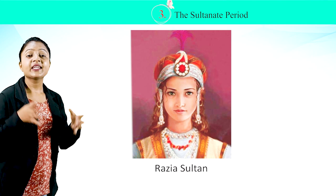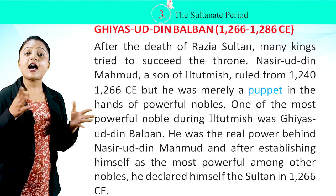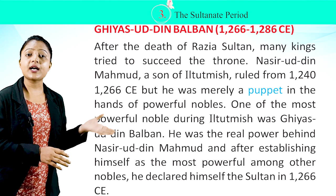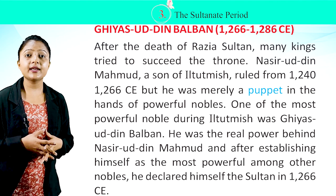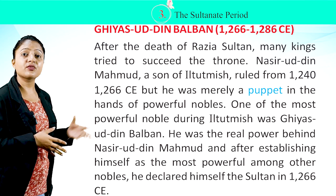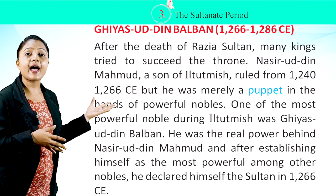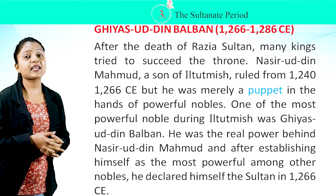Giyasuddin Balban, 1266–1286 CE. After the death of Razia Sultan, many kings tried to succeed to the throne. Nasiruddin Mahmud, a son of Iltutmish, ruled from 1240–1266 CE, but he was merely a puppet in the hands of powerful nobles. One of the most powerful nobles was Giyasuddin Balban, who was the real power behind Nasiruddin Mahmud, and after establishing himself as the most powerful among the nobles, he declared himself Sultan in 1266 CE.